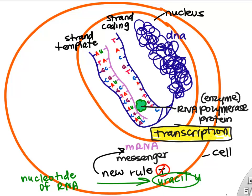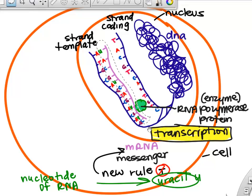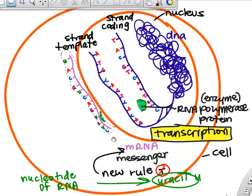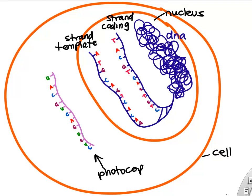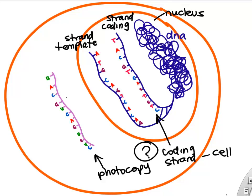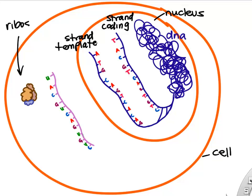So we just did transcription. Using the template strand of DNA, we built a complementary photocopy of DNA called messenger RNA. The cool thing about messenger RNA is it can leave the nucleus and go out to the cell where we actually build proteins. Notice that the mRNA is actually a photocopy of the coding strand — compare the nucleotides of the coding strand to your mRNA, and they're all the same except T's are replaced with U's.